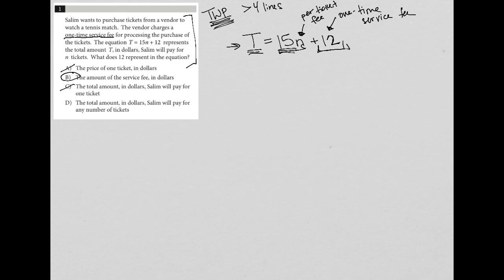And D, the total amount in dollars Salim will pay for any number of tickets. Well, that's what T represents. That's what this equation represents. So D is gone. So B is the best answer here.